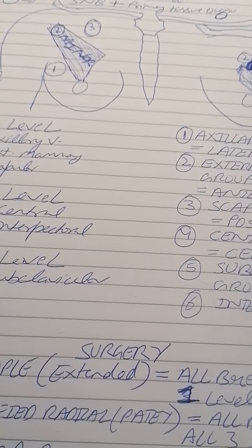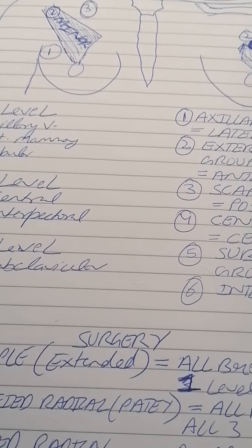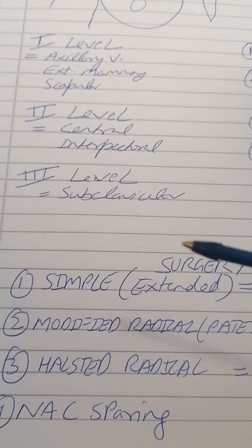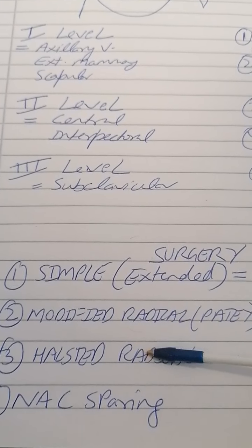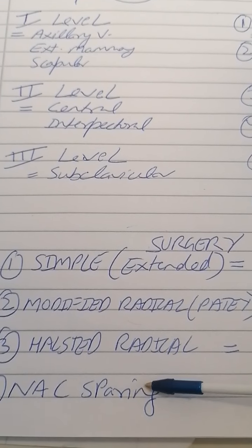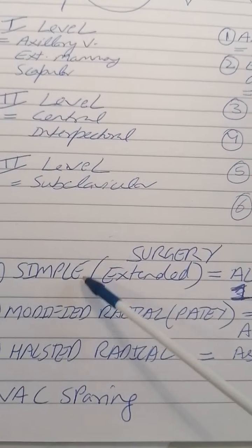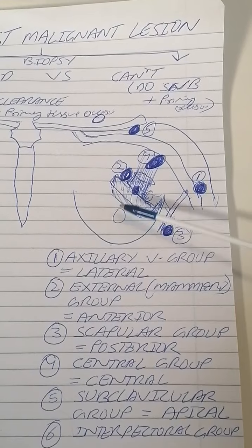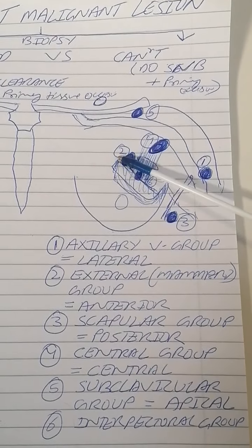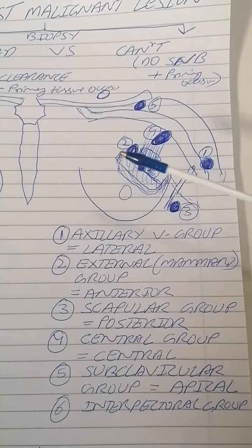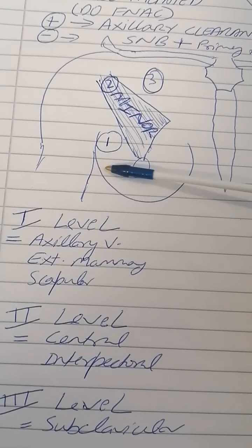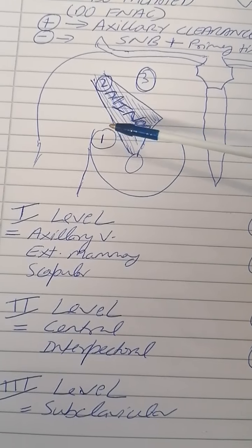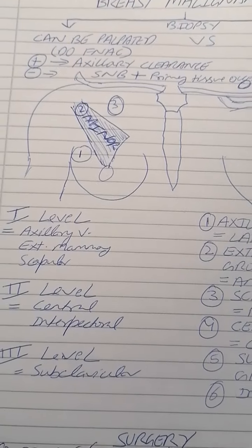Now let's discuss the main surgical procedures for breast malignancy. The first is simple or extended mastectomy. In this procedure, we remove all the breast tissue, the nipple and areolar complex, all the skin of the area, and the level one axillary lymph nodes — those lateral to the pectoralis minor. This is why knowing the levels is so important.